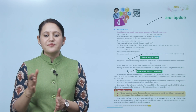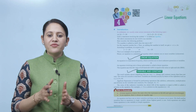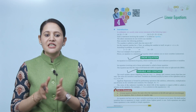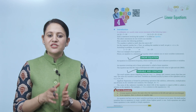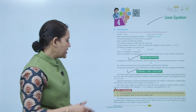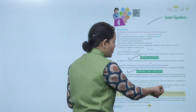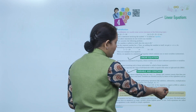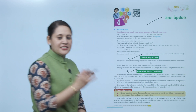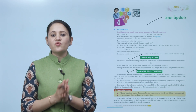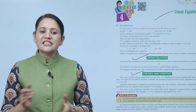For example: 4x plus 5. The value of the unknown or variable for which the LHS of the equation equals the RHS is called the solution of the equation. For example, x equals 5 is the solution of 2x equals 10, because substituting x equals 5 gives 5 into 2 equals 10, meaning LHS equals RHS. So x equals 5 is the solution of the equation.